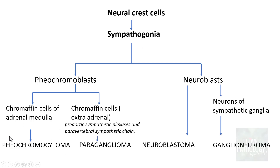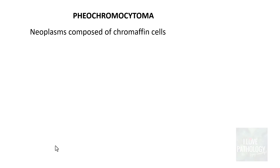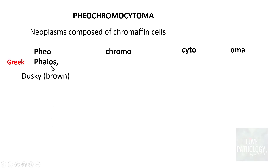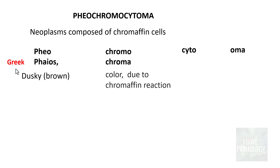Paraganglioma and pheochromocytoma look more or less similar in terms of histomorphological features. Pheochromocytoma is a neoplasm composed of chromaffin cells. The word is derived from the Greek: 'pheos' meaning dusky brown, and 'chromo' from chroma meaning colour — the colour due to the chromaffin reaction. So pheochromocytoma is a tumour composed of chromaffin cells which gives a dusky brown colour when immersed in potassium dichromate salts.